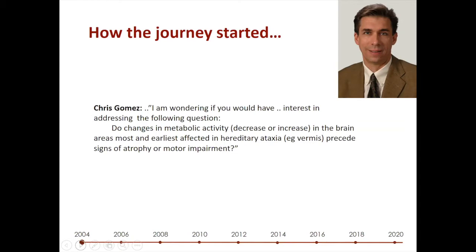This started with a very simple question from my collaborator Dr. Chris Gomez — this is an actual copy from his email: 'I'm wondering if you have an interest in addressing the following question: Do changes in metabolic activity in the brain areas most and earliest affected in hereditary ataxia precede signs of atrophy and motor impairment?' That's how it all started. I learned about the diseases and effects on the cerebellum, and we decided to pursue this question together.